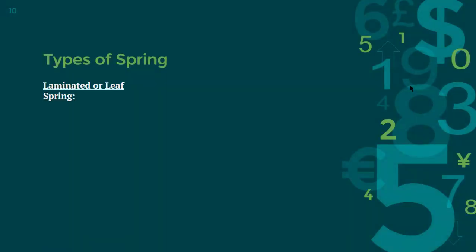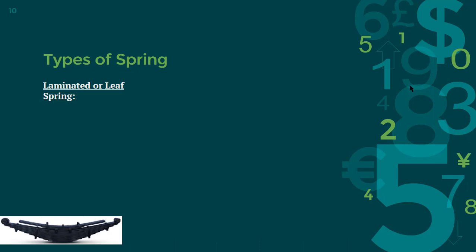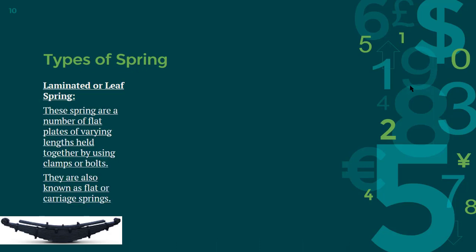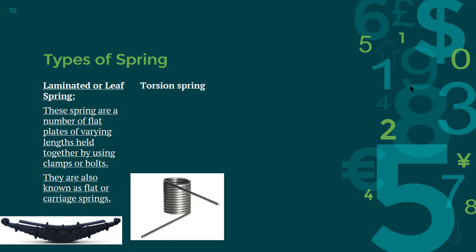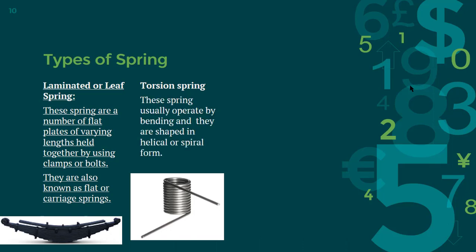Another type are laminated or leaf springs. These are just rectangular bars clamped together and are found in the suspension of large vehicles. They are also known as flat or carriage springs. Then we have torsion springs, which are shaped in the form of a helix or spiral and usually operate by bending.